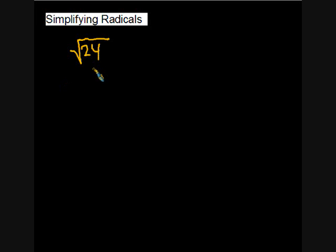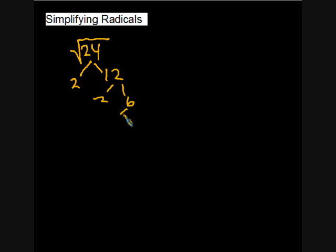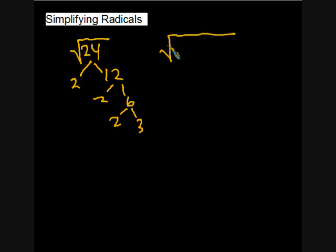For our first example, let's simplify the square root of twenty-four. We'll make a factor tree: divide twenty-four by two to get twelve, divide by two to get six, divide by two to get three. Now we have all the prime factors of twenty-four: two times two times two times three. We can rewrite that as the square root of all those prime factors.